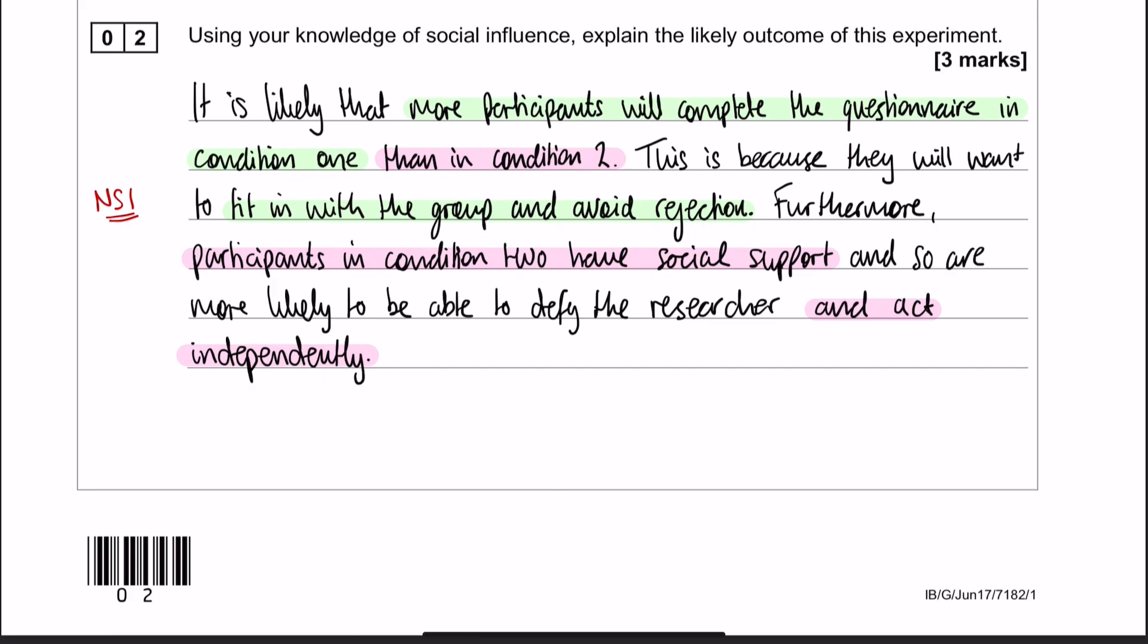And then on top of that, we're also just going to point out that participants in condition two have got social support, and so they're more likely to be able to defy the researcher and act independently.